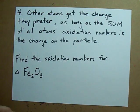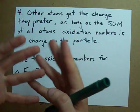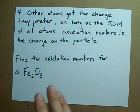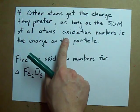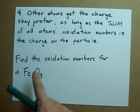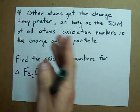The last step, step four, is that other atoms get the charge that they prefer, you know, valence-wise. Just make sure that the sum of all the atoms' oxidation numbers is the total charge on the particle.